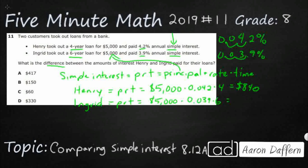So 5,000 times 0.039 is 195, times 6, and that gives you $1,170.